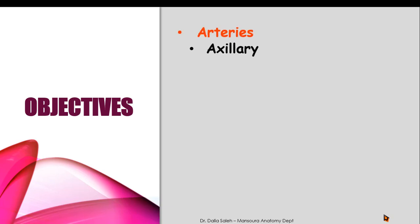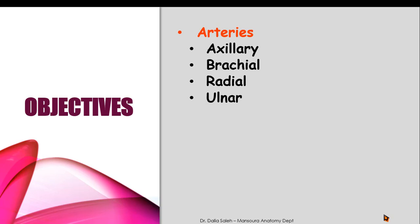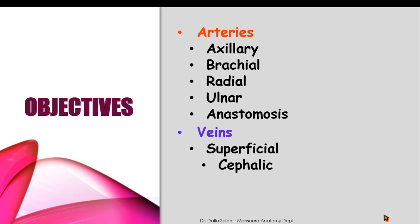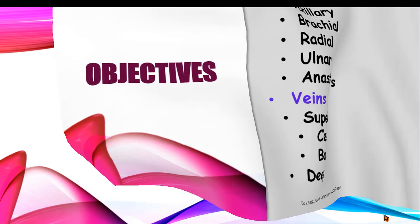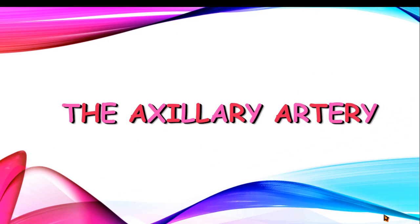The objectives of my presentation are: first I will discuss the arteries — the axillary, the brachial, the radial, the ulnar arteries — and also the anastomosis between the different arteries. Then I will discuss the veins, the superficial veins including the cephalic and the basilic veins, and then I will talk about the deep veins of the upper limb.